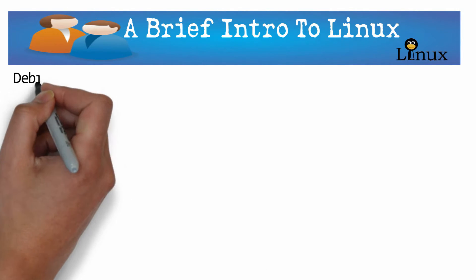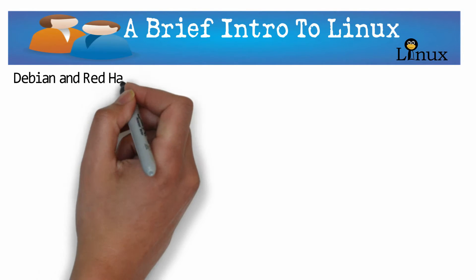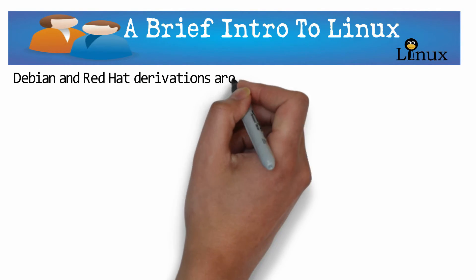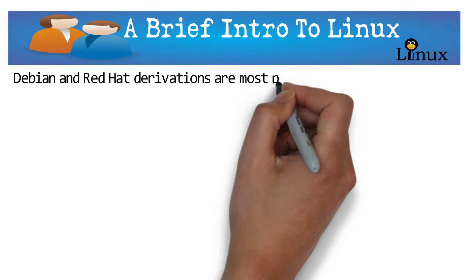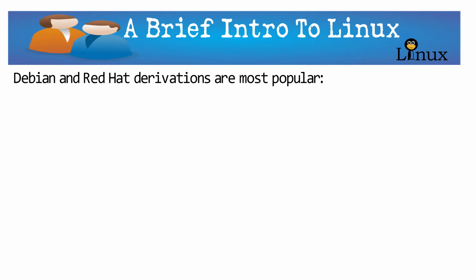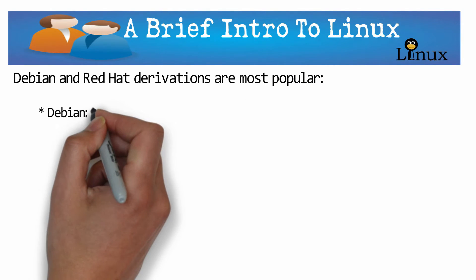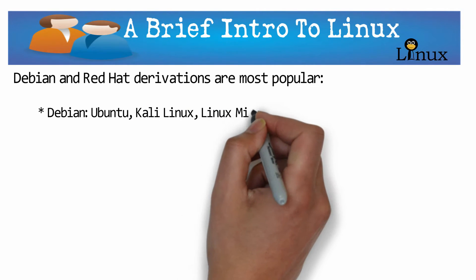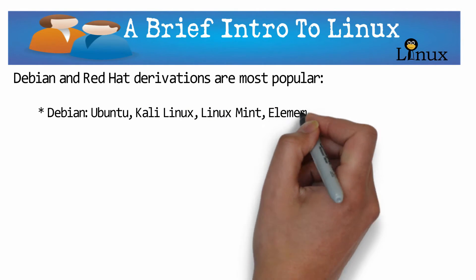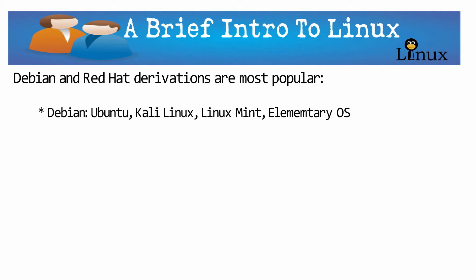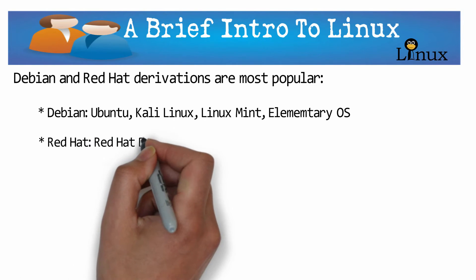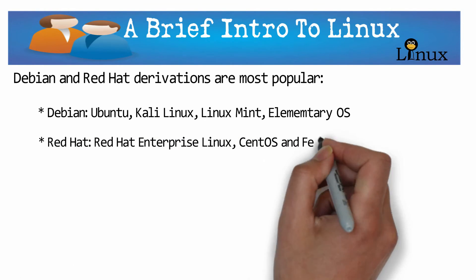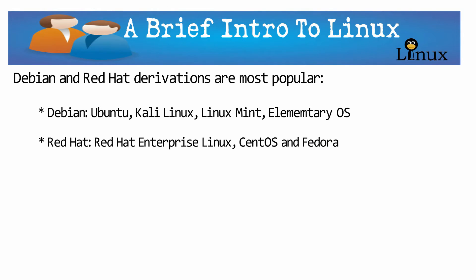Depending on your industry, company, or institution, you are likely to end up learning the command line on a system that inherits from one of these distributions — but most likely you will be using one derived from Debian or Red Hat. Ubuntu, Kali Linux, Linux Mint, and Elementary OS are all derived from Debian, while Red Hat Enterprise Linux, CentOS, and Fedora are derived from Red Hat.